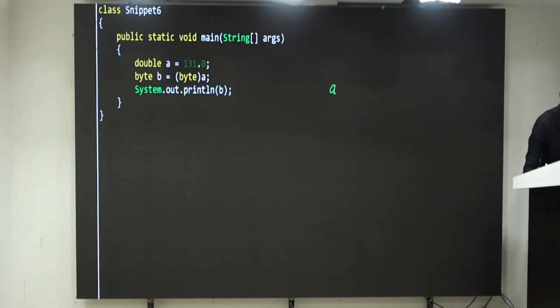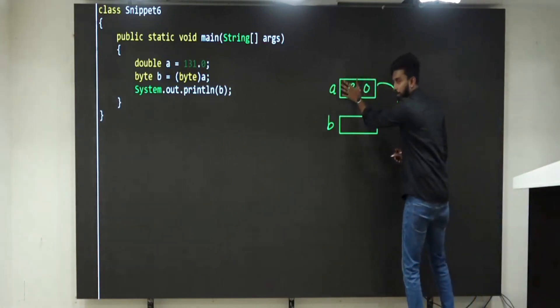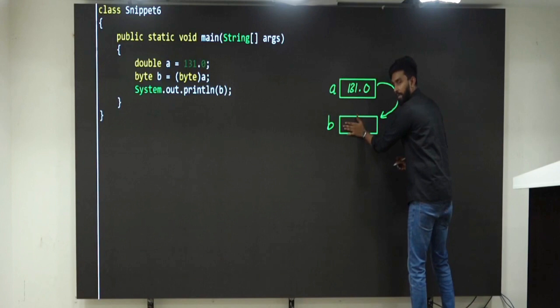Okay. Now, inside A, what is the value? 131.0. Next line, this is B. Watch it. Inside B, what you are telling is, boss, whatever is in A, assign it to B. A is of type double, converted into byte.